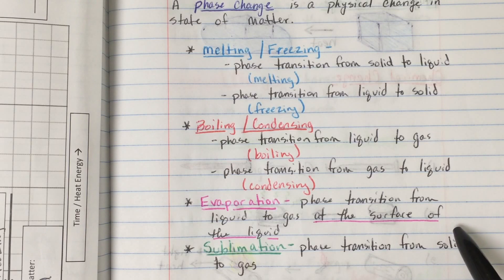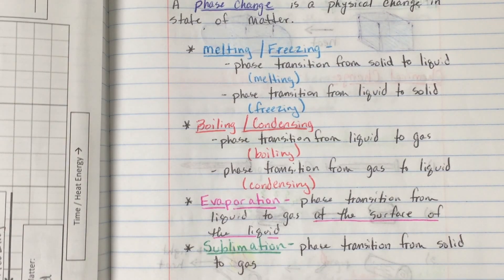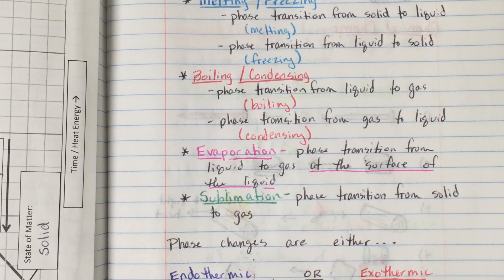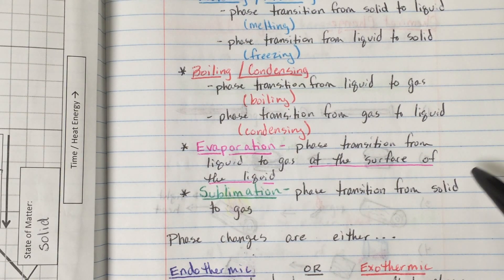A little bit different from boiling is evaporation, and students often confuse these two, but evaporation is a different type of phase transition. Evaporation can occur at any temperature, whereas boiling exclusively occurs at the boiling point, and it is a phase transition from liquid to gas at the surface of the liquid.